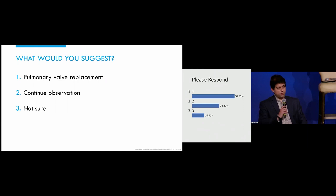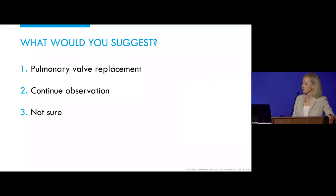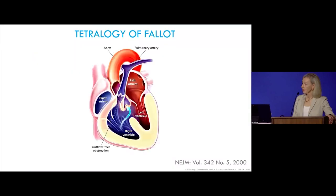I think the RV is quite large — it would be hard not to operate. The cutoff of 150–160 has been shown to correlate with lack of improvement in RV size and function after pulmonary valve replacement. If you do it too late, the ventricle doesn't recover. So she was referred for surgical pulmonary valve replacement; at the time she presented, percutaneous options were limited.